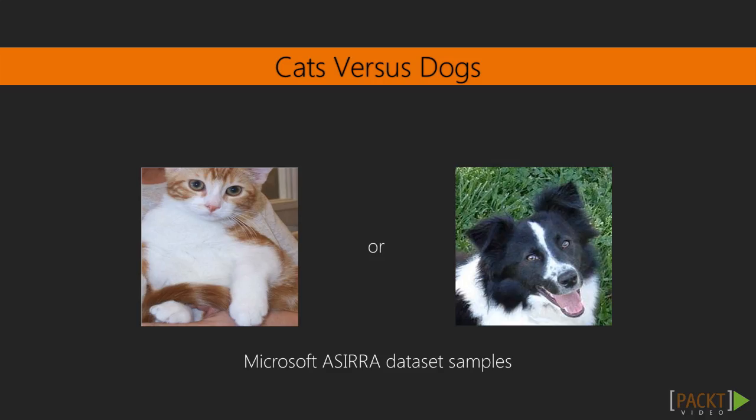The cats versus dogs, or Microsoft's Asirra dataset, is a collection of images of pets. We are looking at a binary classification problem. We are going to use the version of the dataset provided on the Kaggle website. As an exercise, I recommend you to modify the convolutional neural network code in section 1 to solve this problem. The images need to be loaded and resized to a common shape.